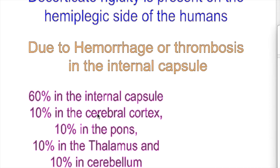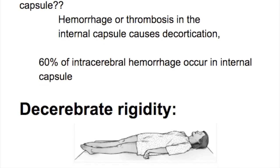In the other four parts, each accounts for 10% of hemorrhage cases. These are the cerebral cortex, pons, thalamus, and cerebellum.